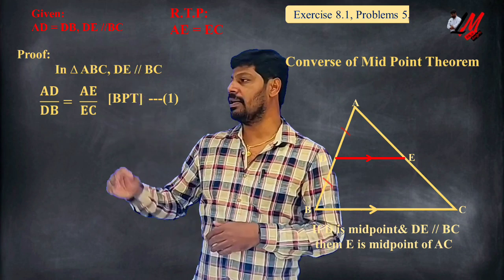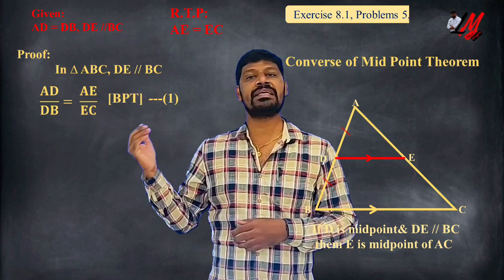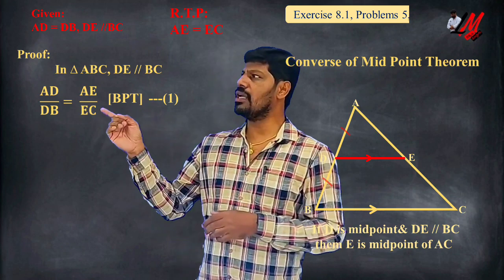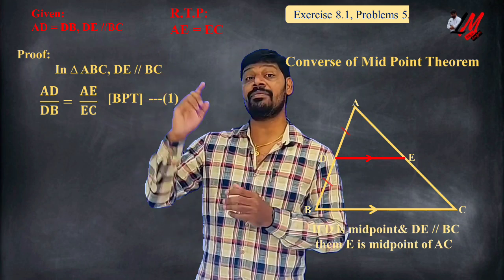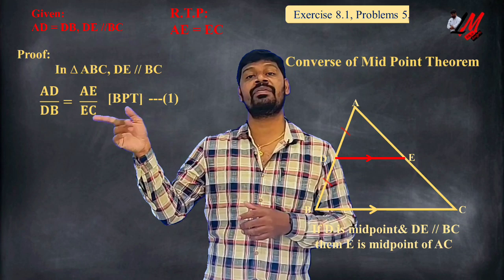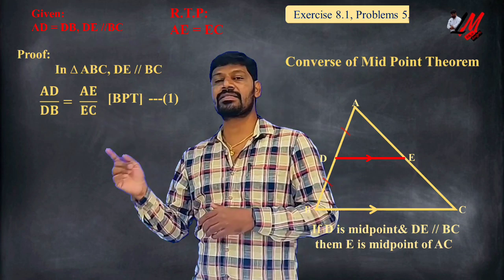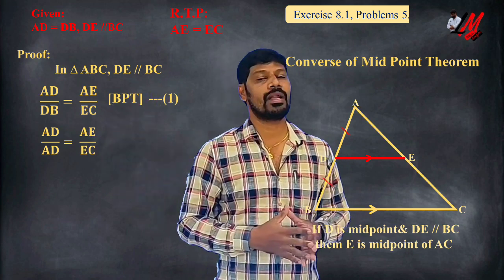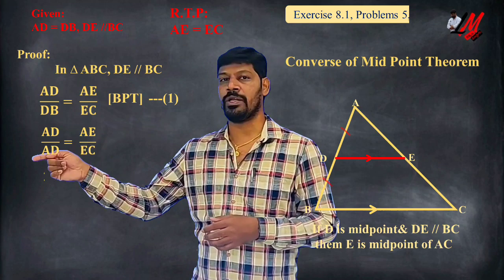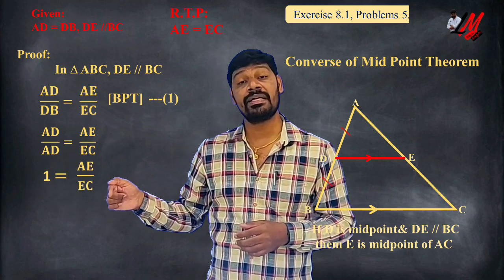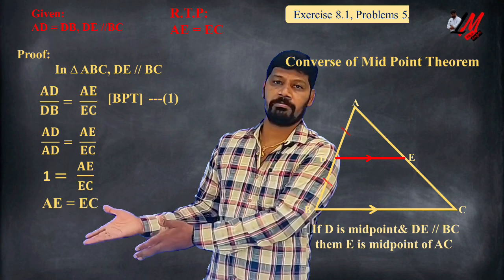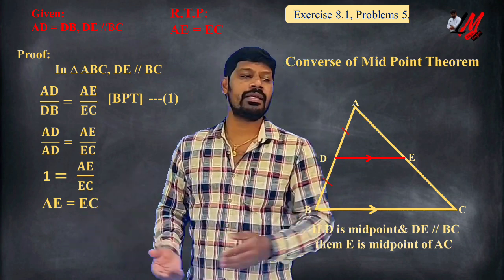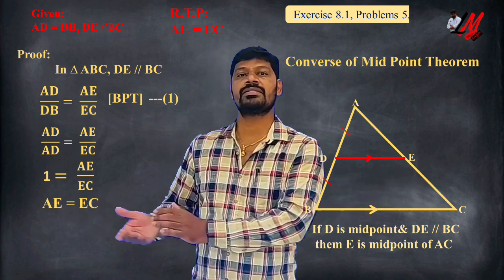DE is parallel to BC. By the Basic Proportionality Theorem, AD by DB equals AE by EC. Given that AD equals DB, substituting gives AD by AD equals AE by EC, which simplifies to 1 equals AE by EC. Therefore EC equals AE, or AE equals EC. So E is the midpoint of AC. This proves the converse of the midpoint theorem.